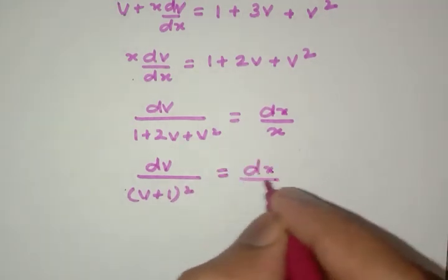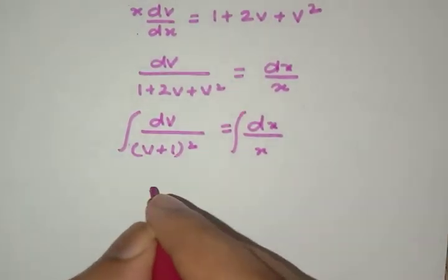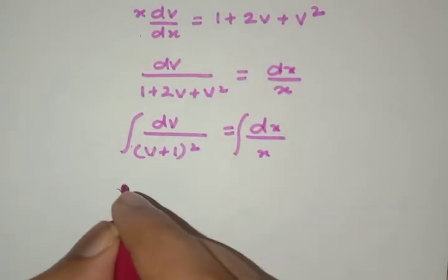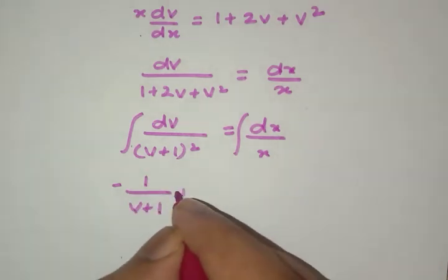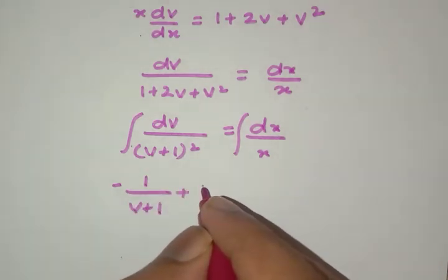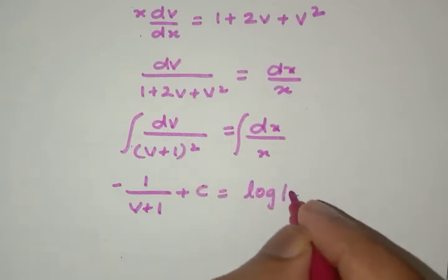Now we can integrate both sides which gives us -1/(v + 1) + c = log|x|.